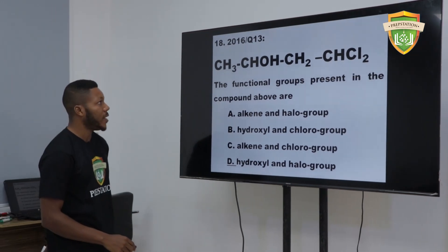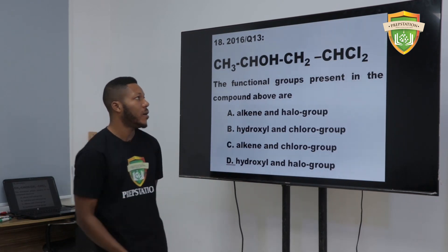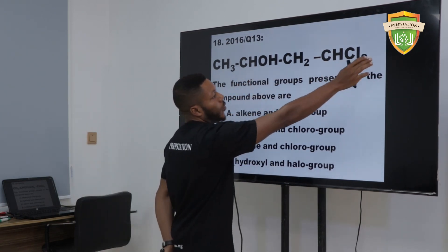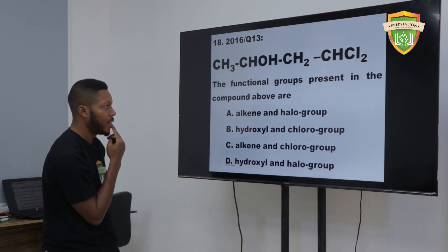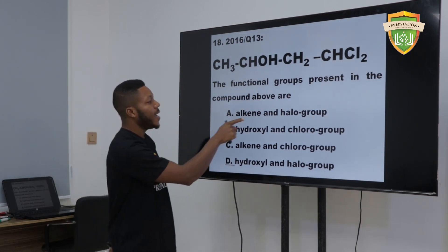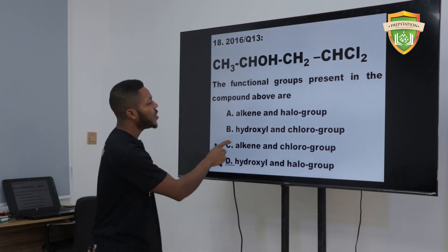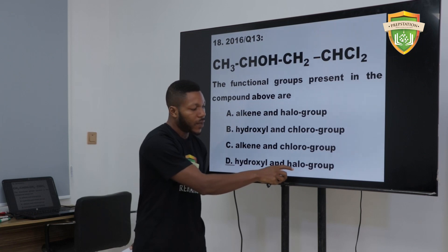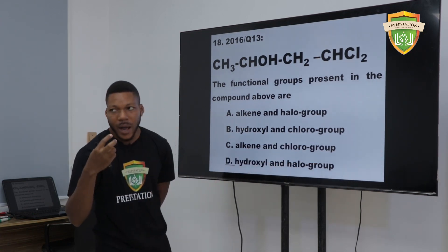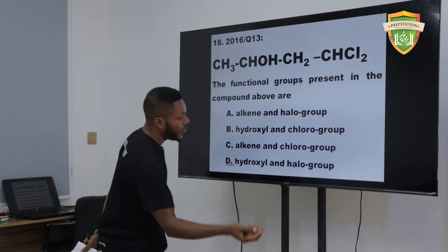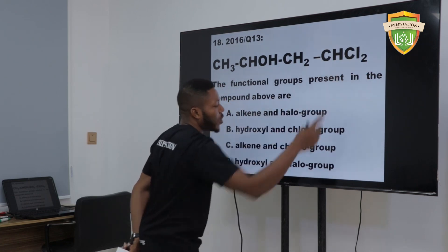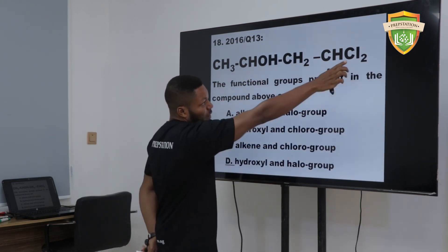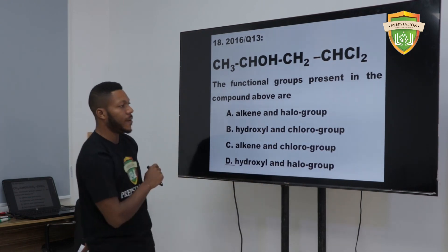Question 13, 2016: The functional groups present in the compound above — look carefully. We have OH and we also have chlorine. We have two close options. Alkene and haloalkene is gone. We have hydroxyl and chloro group. But because chloro falls under halo group — which includes bromine, chlorine, iodo — to be very specific, the best option is hydroxyl and halo group. So D is the best option, not B. Be careful in questions like this.